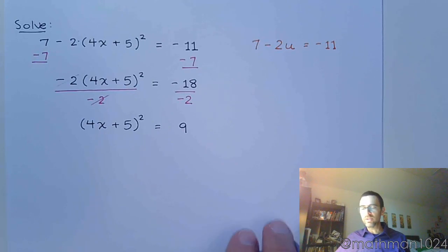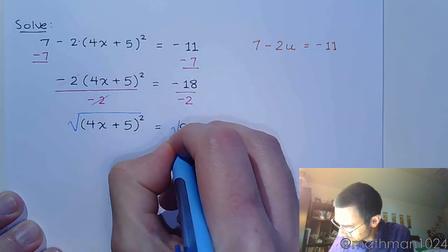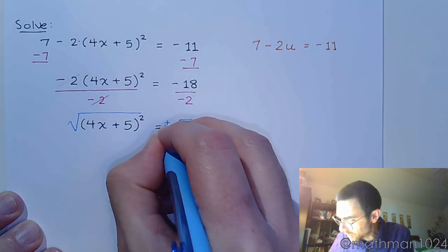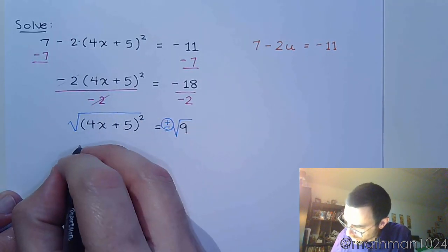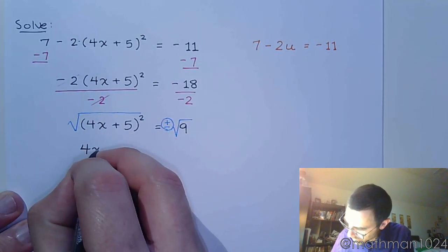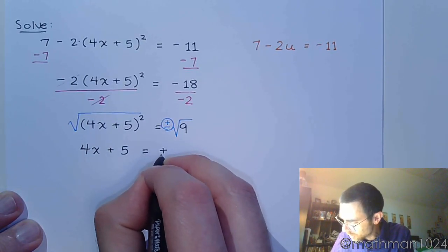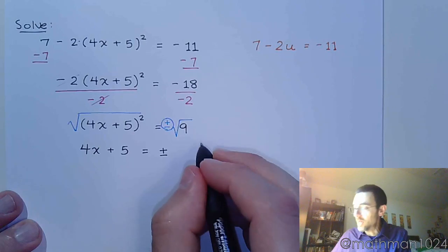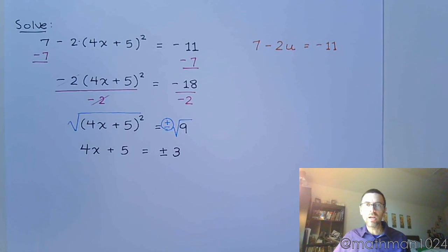And now that I've got the square by itself, I can use the square root property. So let's take the square root of both sides. Don't forget the plus or minus. All right, so I take the square root of the square - this becomes 4x + 5 on the left, is equal to ± - and the square root of 9 is just 3. It's not the square root of 3, it's not 3i. The square root of 9 equals 3.